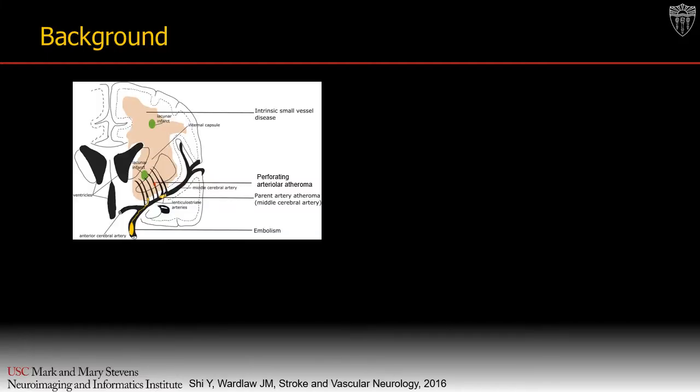In this study, we are interested in segmenting the lenticulostriate arteries, or LSAs, which are small arteries on the order of 500 microns that branch off directly from the high-flowing MCA. Early cerebromicrovascular changes in conditions related to small vessel disease are difficult to evaluate because these small vessels are largely inaccessible to existing clinical in-vivo imaging technologies.